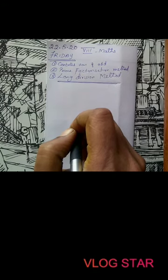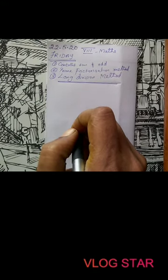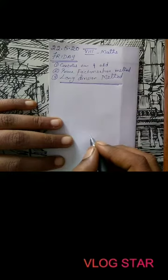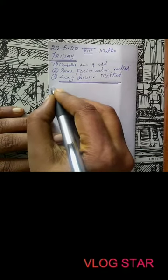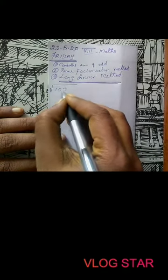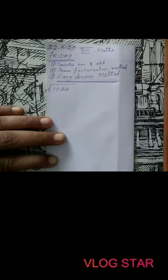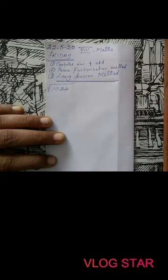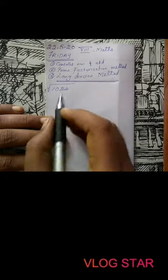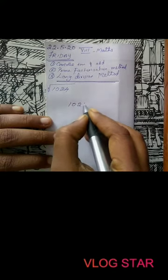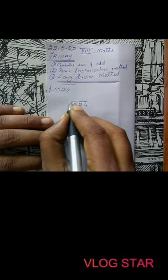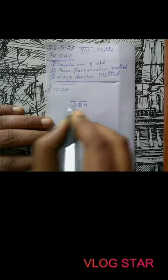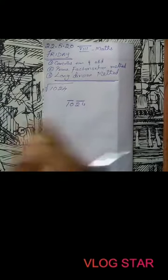I will get straight into the problem, show how to do it, and then write the steps for you so they are easy to follow. Suppose our question is: find the square root of 1024. Normally for squares we take numbers in pairs. So for 1024, I will take it as pairs — first 24, then the next two numbers. I will draw a bar on top of every two numbers.